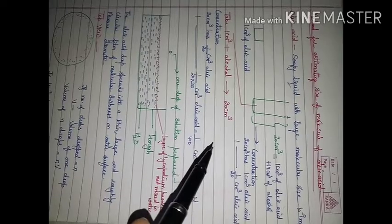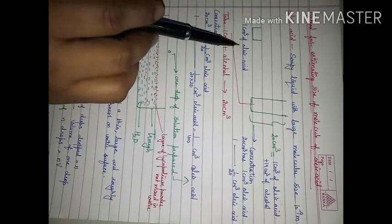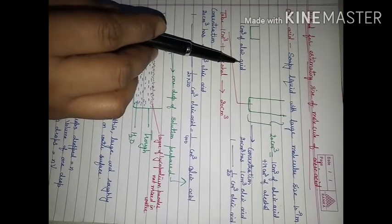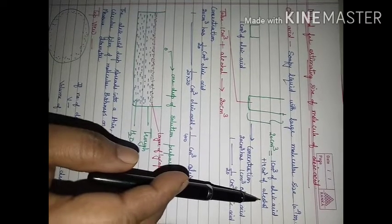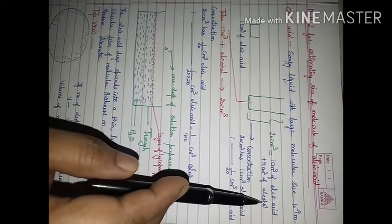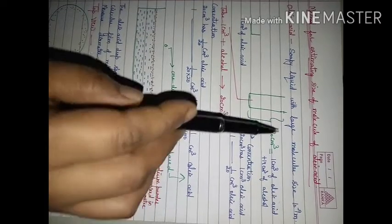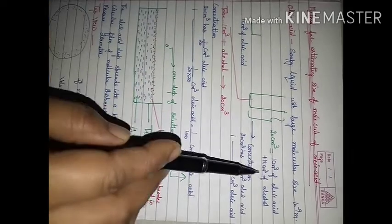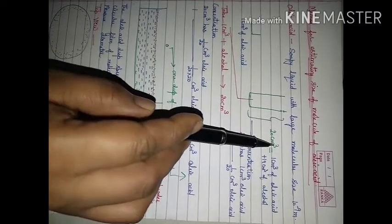The first step is to take 1 cm³ of Oleic Acid and add it into 19 cm³ of alcohol, which means we are diluting it by mixing it with alcohol. So the total volume we now have is 1 cm³ of Oleic Acid and 19 cm³ of alcohol, giving a total of 20 cm³.